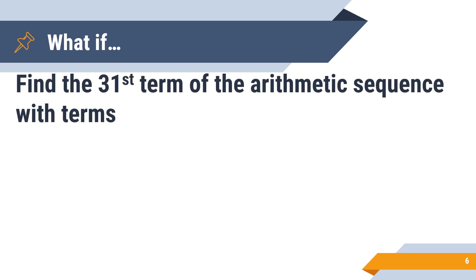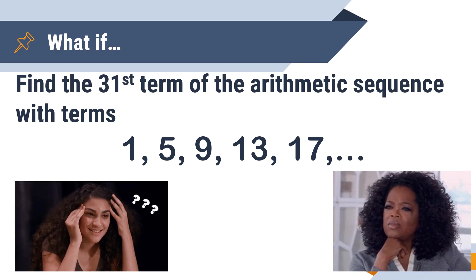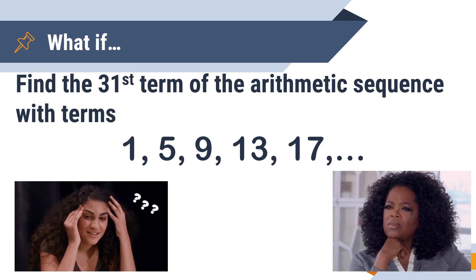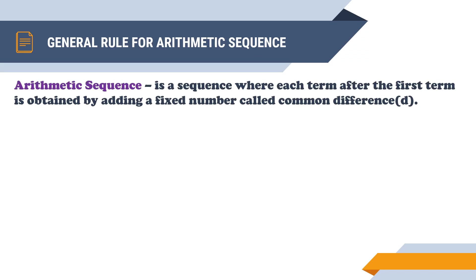So obviously, if you know the common difference of the arithmetic sequence, you can easily get the next term. But what if you have to find a term that is not the next term? For example, find the 31st term of the arithmetic sequence 1, 5, 9, 13, and 17. To solve that, we're going to need the general rule for arithmetic sequence, which we can derive using its definition: an arithmetic sequence is a sequence where each term after the first is obtained by adding a fixed number called the common difference.